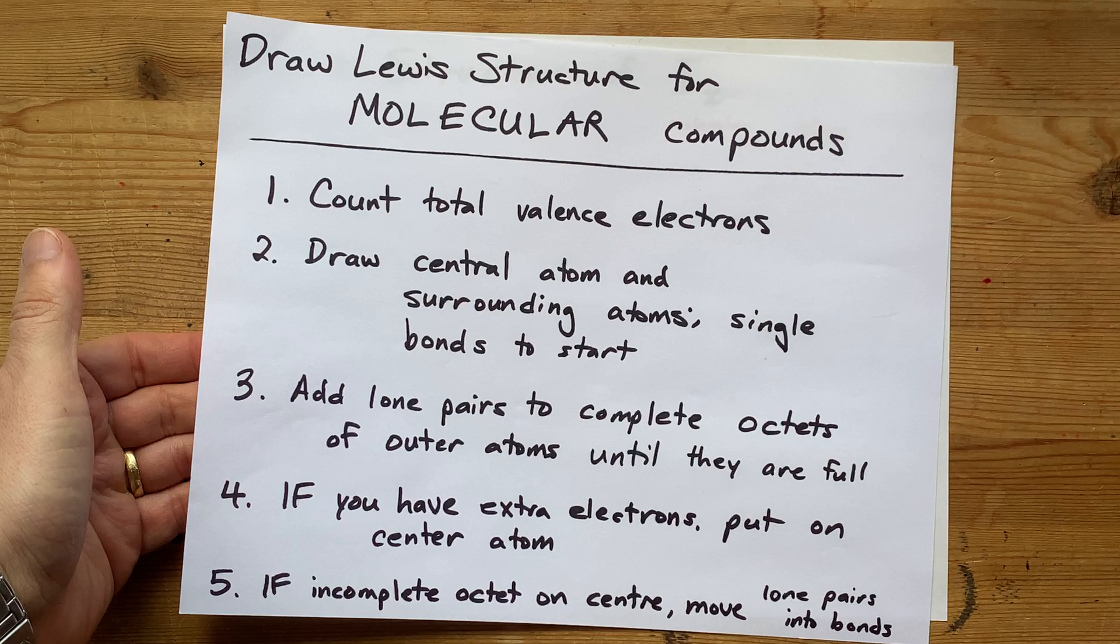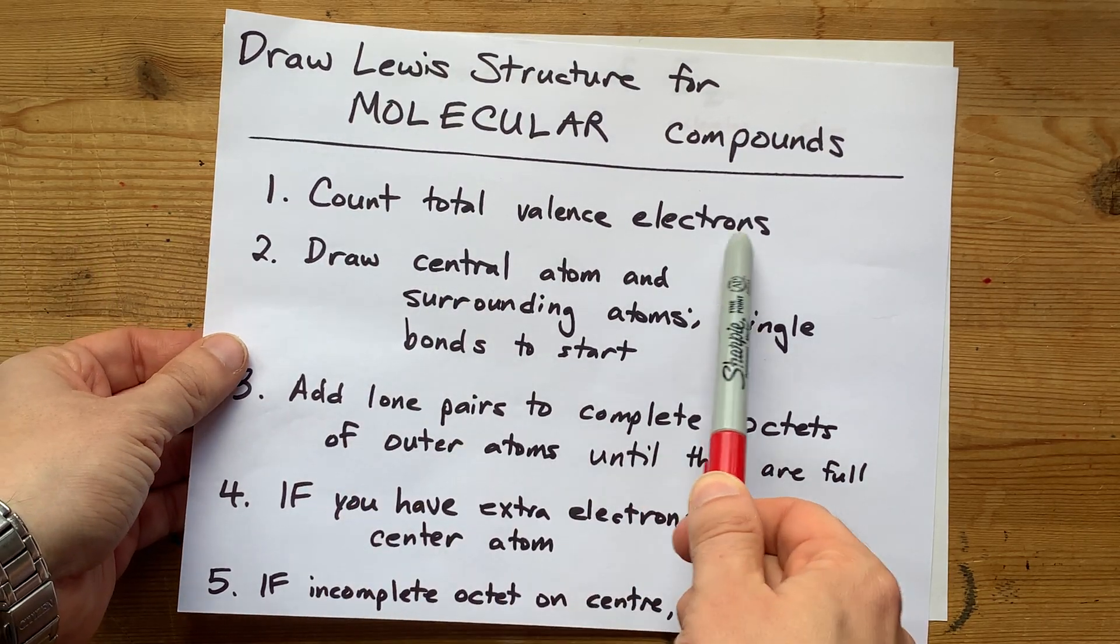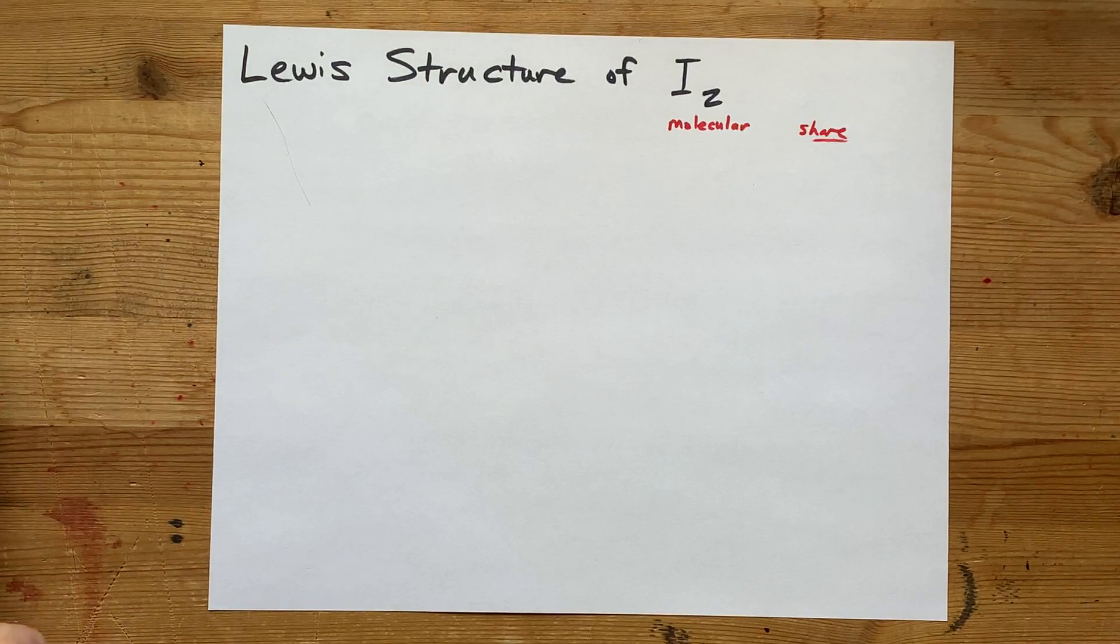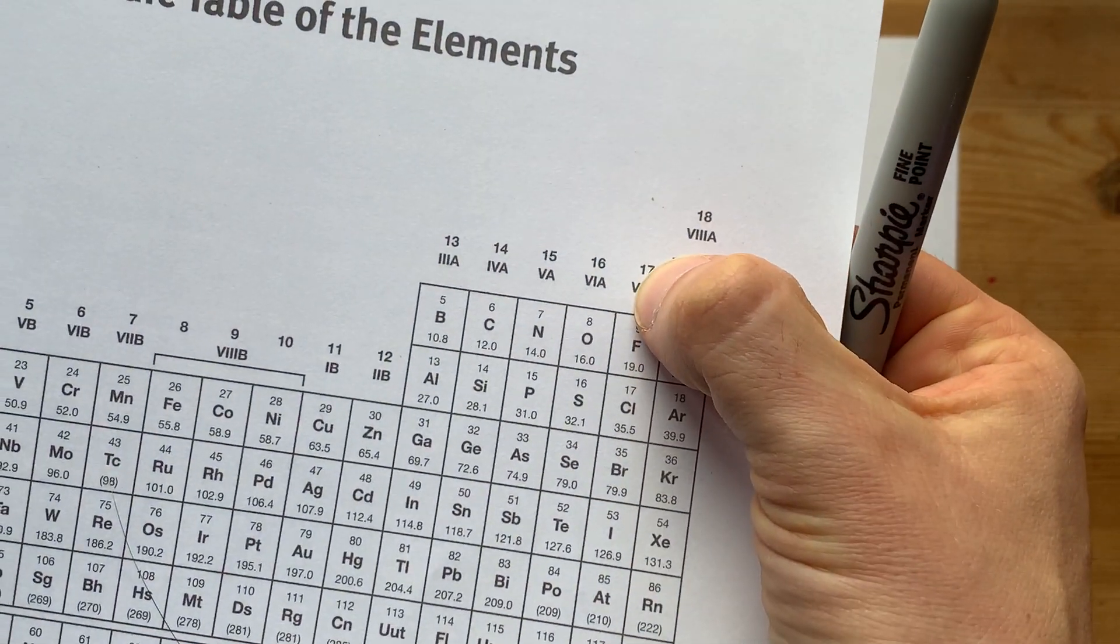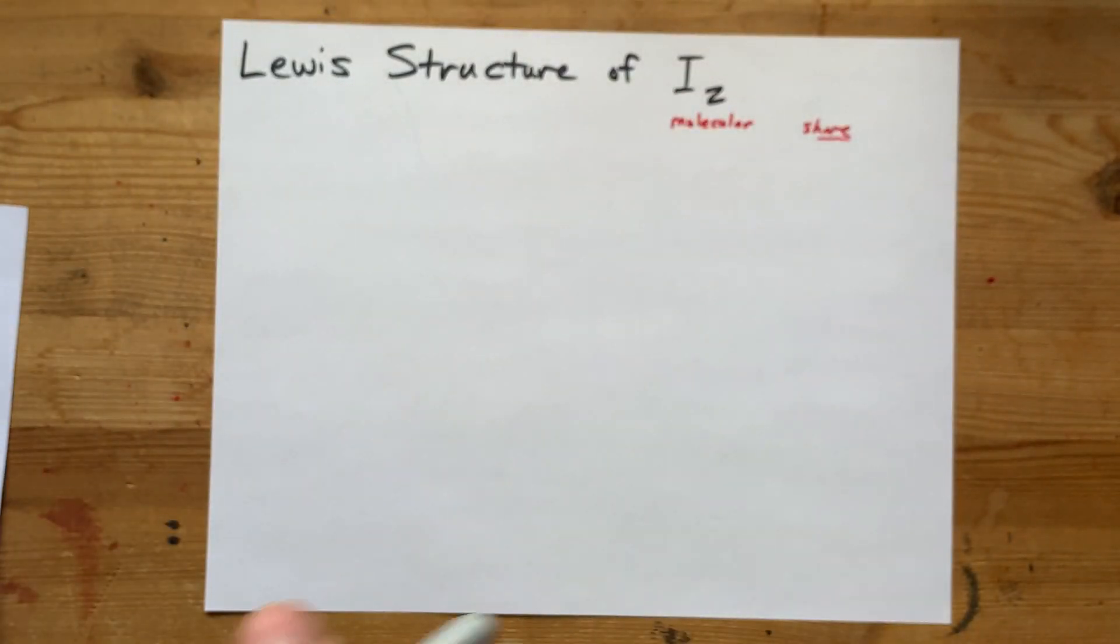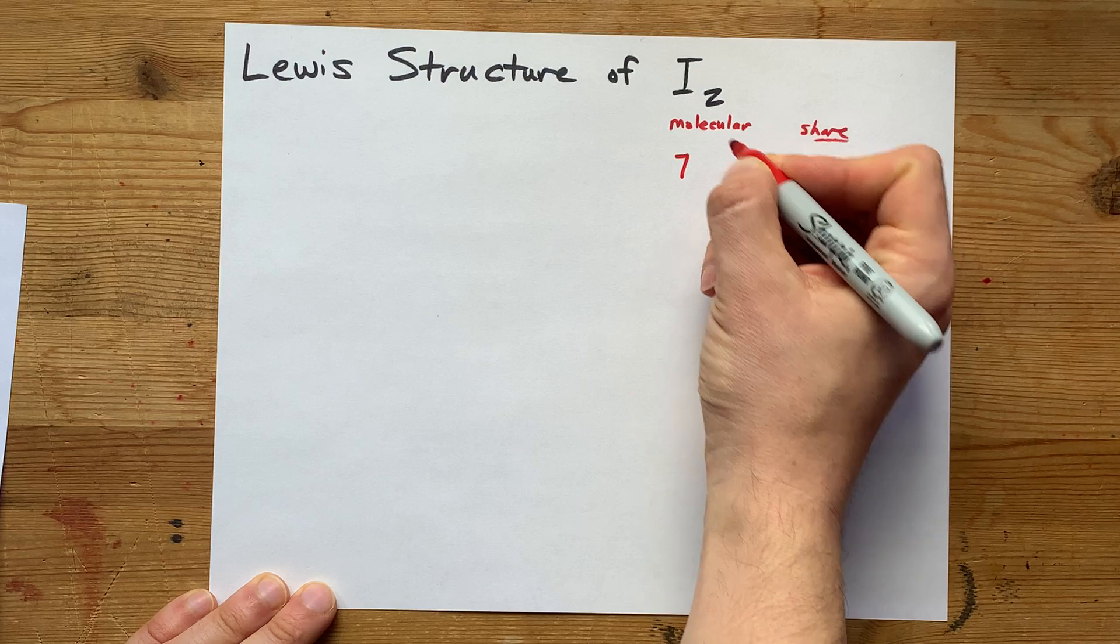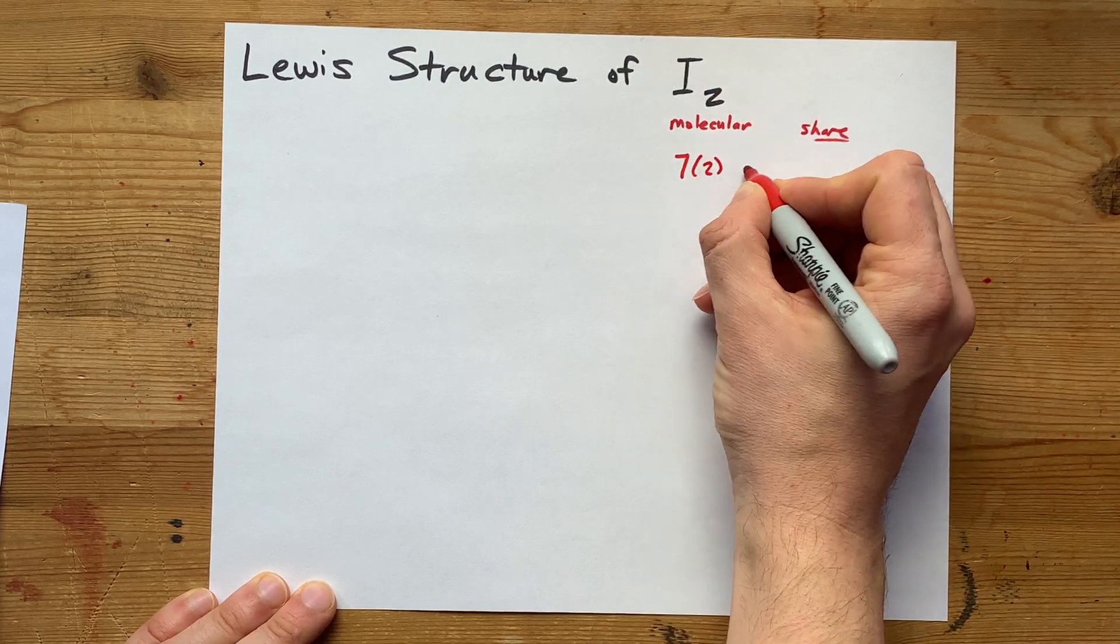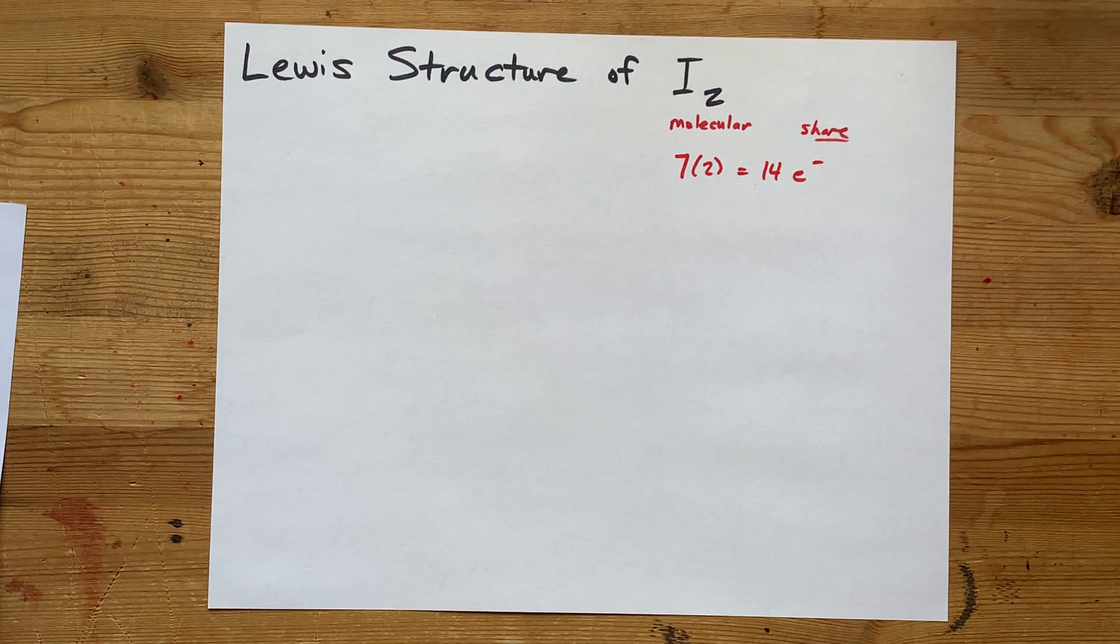Now the method I have to draw the Lewis structure for molecular compounds is to count the total number of valence electrons first. Well, iodine here is in group 17, and therefore it brings seven valence electrons with it. But that's each, and there's two of them, which means I need 14 electrons total in this Lewis structure.